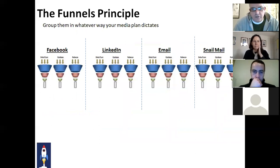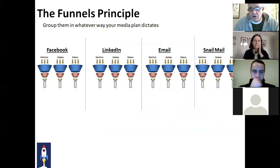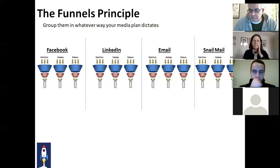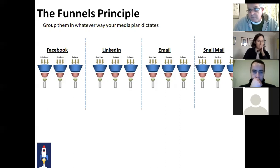Once you've got a number of funnels, you can group them in whatever way you want or whatever way your media plan dictates. You might say, I'm going to build my campaign strategy for Facebook, and therefore I have a marketing funnel for Debs Prior and Facebook, and for Rebecca and Facebook. The same with snail mail or email — each one will have a different customer journey, particularly in the first two phases. When building campaigns for each one, you could group them together by media.